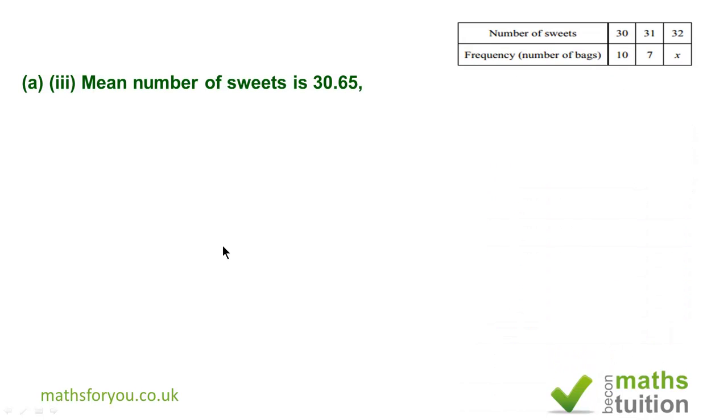Part A sub 3, we are supposed to find the value of x given that the mean number of sweets is 30.65. So if we do 30.65 times (17 plus x) is equal to (10 times 30) plus (1 times 7 plus 32x).